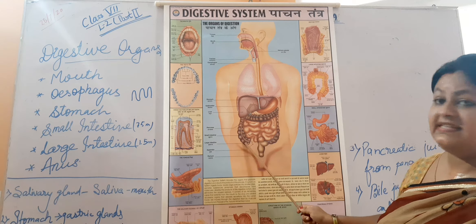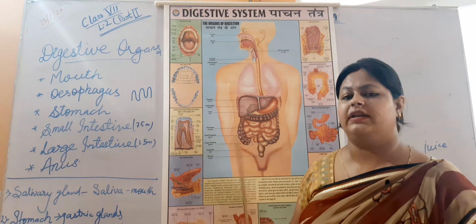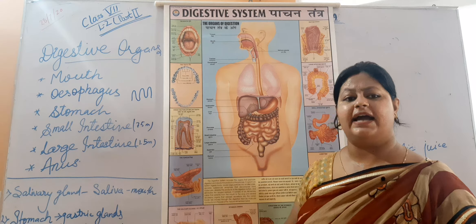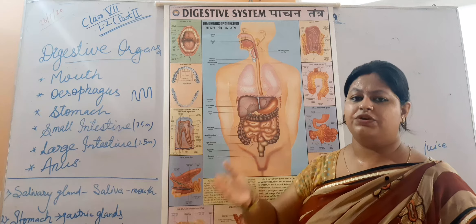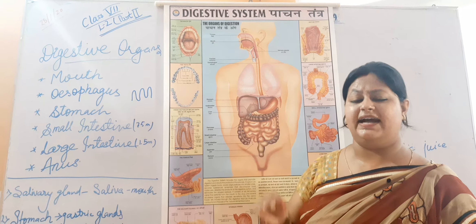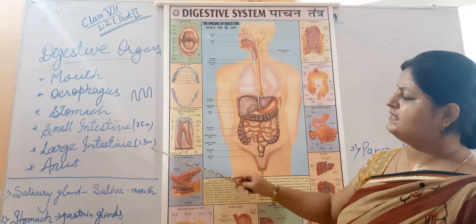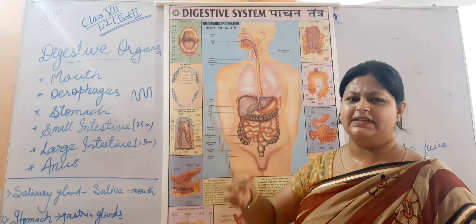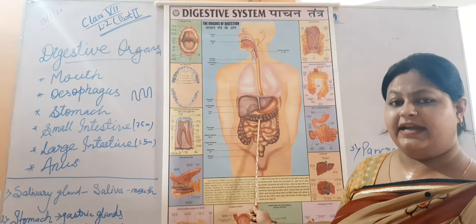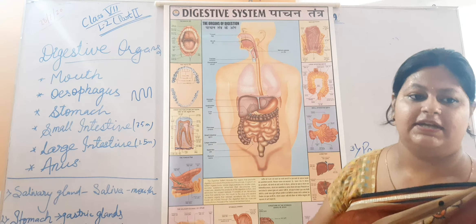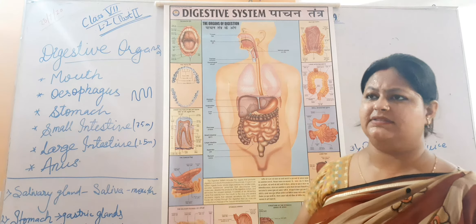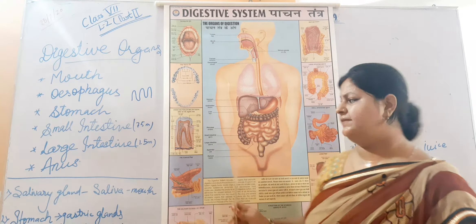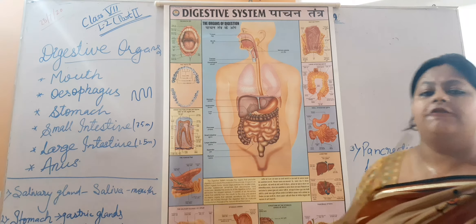The large intestine is around 1.5 metres long. Its function is to absorb the excess water and salts from the waste. As undigested food transfers from the small intestine, the large intestine absorbs the excess water and certain salts from that waste, and then transfers the remaining material to the anus for discharge.